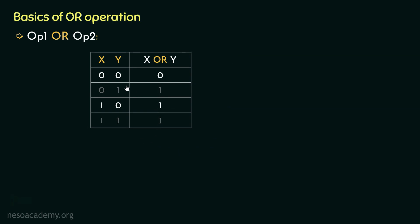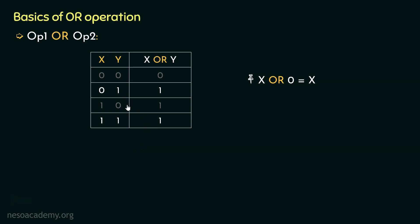Consider these two rules. If we reset the Y input to be 0, then whatever we are sending via input X is what the output generates. So if X is 0, the output is 0; if X is 1, the output is also 1. So from this we can state: X OR 0 will always give us the value X. Now from a different perspective, if we set the input of Y to be 1, then whatever we are sending via X doesn't matter — the output is always 1. So from this we can state: X OR 1 will always result in 1.